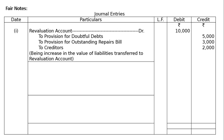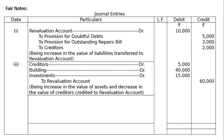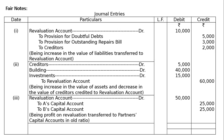Second entry — creditors account debited 5,000, building account debited 40,000, investments account debited 15,000, to revaluation account — being increase in value of assets and decrease in value of creditors credited to revaluation account. Third entry — revaluation account debited 50,000 to A's capital account 25,000 and to B's capital account 25,000 — being profit on revaluation transferred to partners' capital accounts in old ratio.